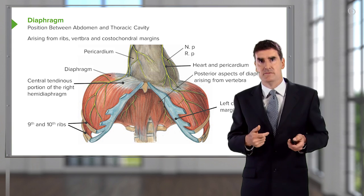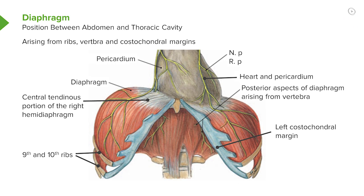This is a diagram of the diaphragm. You can see the dome of the right and left hemidiaphragm, and the central tendinous area in the middle. The diaphragm arises posteriorly from the vertebral bodies, from the costochondral margin and ribs around the sides, and the xiphoid process anteriorly. The diagram clearly shows that when the domed diaphragm contracts and shortens, the dome flattens, and that expands the lungs.